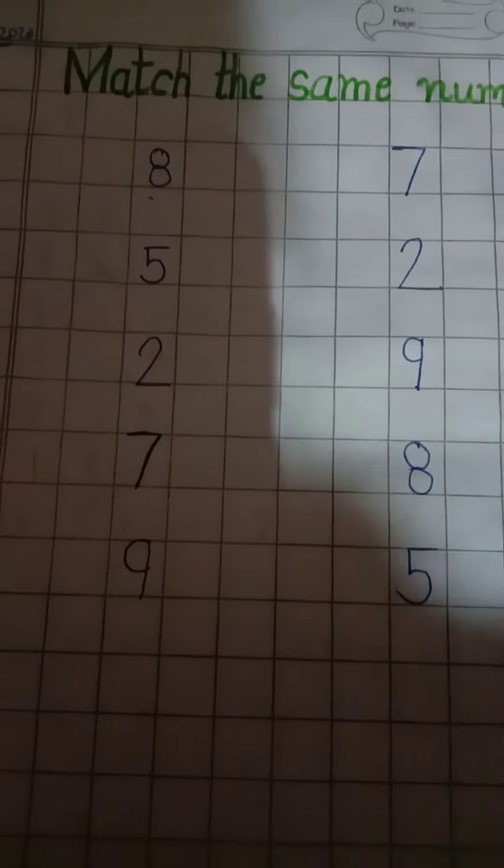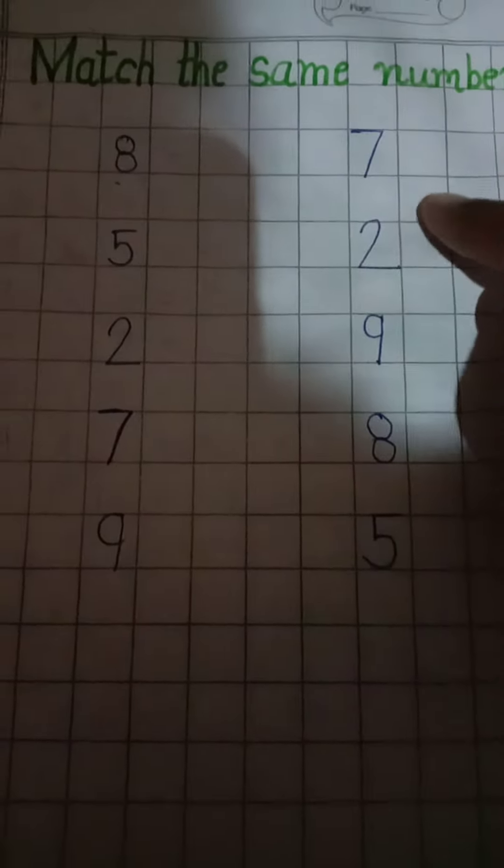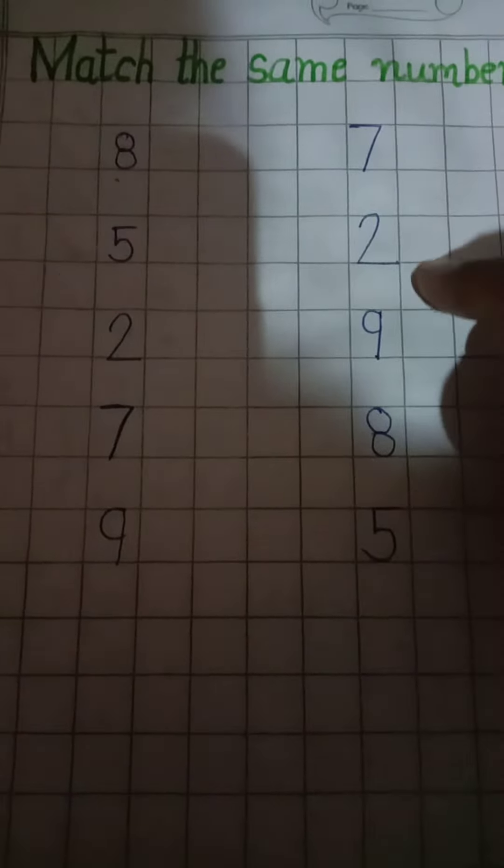One circle and one more circle. Which number is this? It's a number 8. Where is the number 8? Yes, it's a number 8. So, match the 8 with 8.